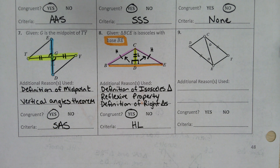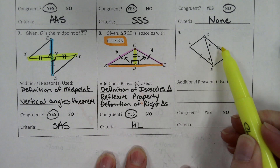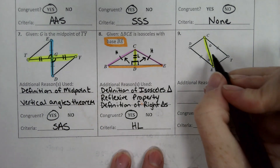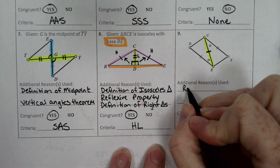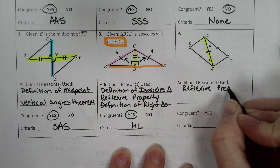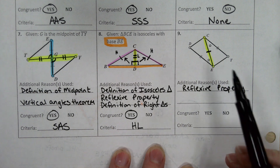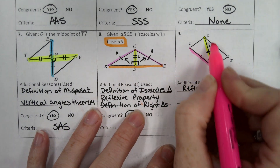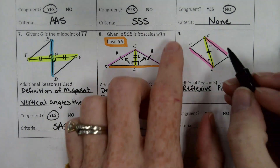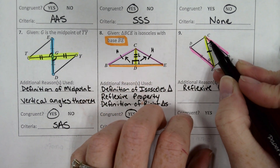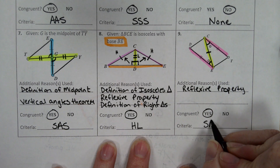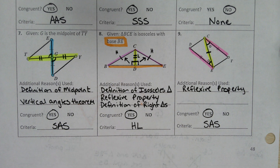Three additional reasons apply in example eight: definition of isosceles triangle gives the hypotenuse sides, reflexive property gives the leg, and definition of right triangles allows us to call them H and L instead of just S. These triangles are congruent by hypotenuse-leg. In example nine, one pair of congruent sides and one pair of congruent angles are already marked. Adding the shared side via reflexive property gives two sides and one included angle — congruent by SAS.